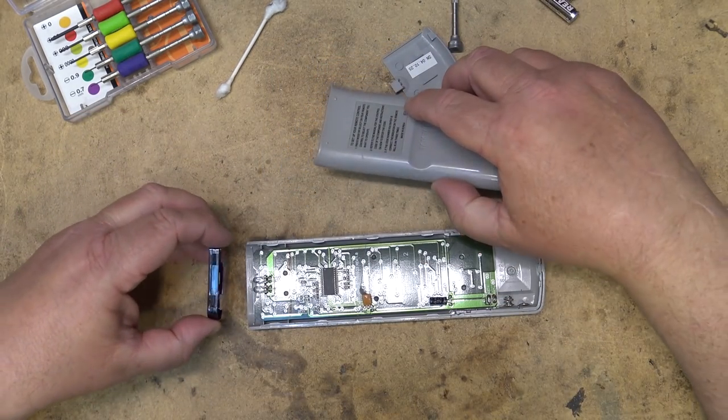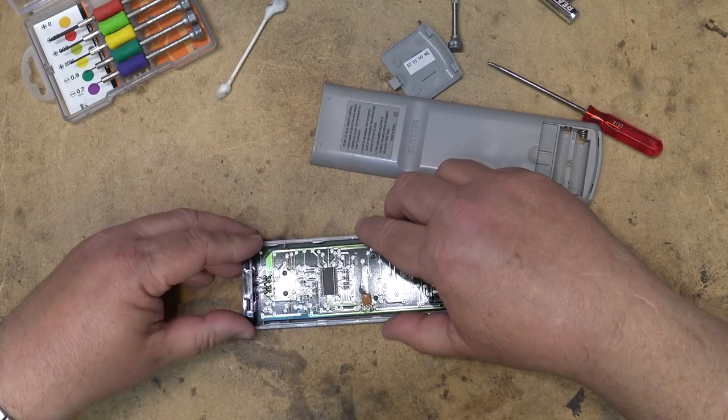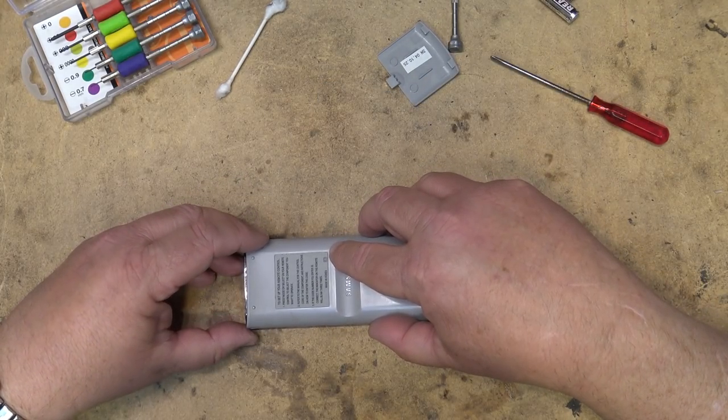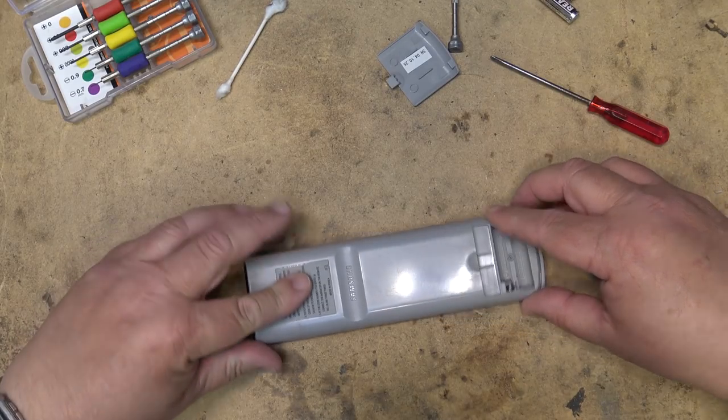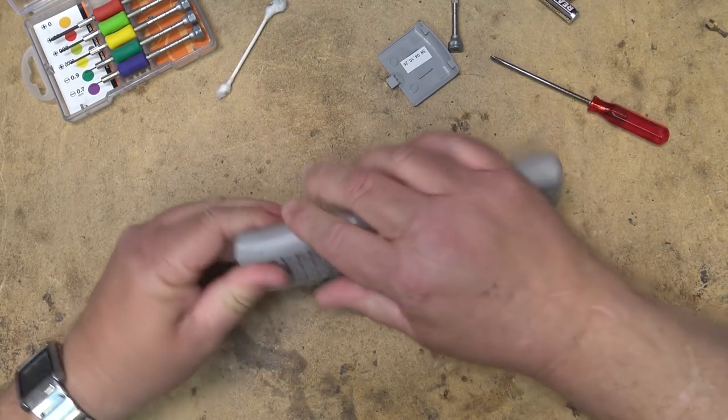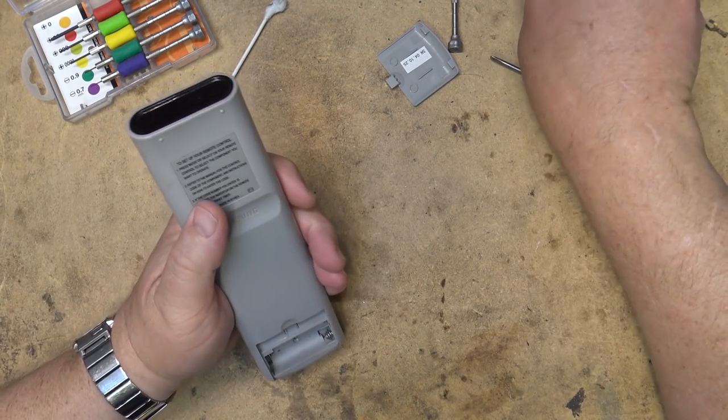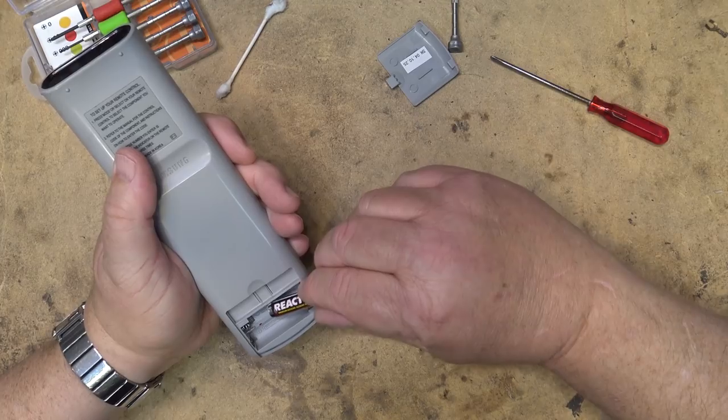The window fits in only one way. The remote control snaps back together just like that, and now the moment of truth.